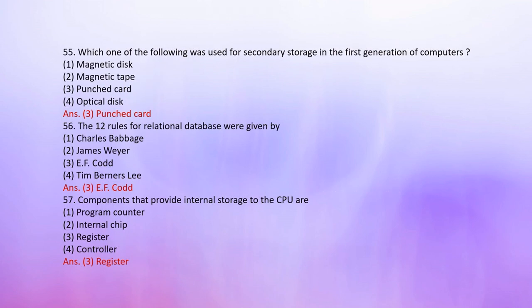Number 55: Which was used for secondary storage in the first generation of computers? 1. Magnetic disk, 2. Magnetic tape, 3. Punch card, 4. Optical disk. The correct answer is 3: Punch card.